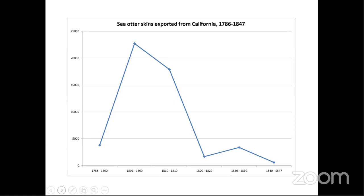Sea otter fur density is one million hairs per square inch — extremely dense. Even though they're mammals, they don't need blubber to survive in the water. Their fur is so dense it keeps them from becoming hypothermic. The difference between sea otter fur and river otter fur is density: sea otters have much more thickness and density, though river otters are still very furry as well.